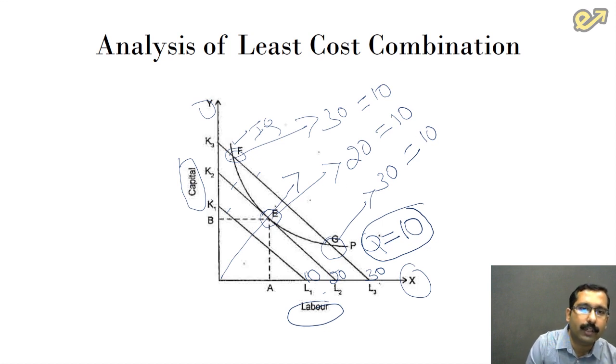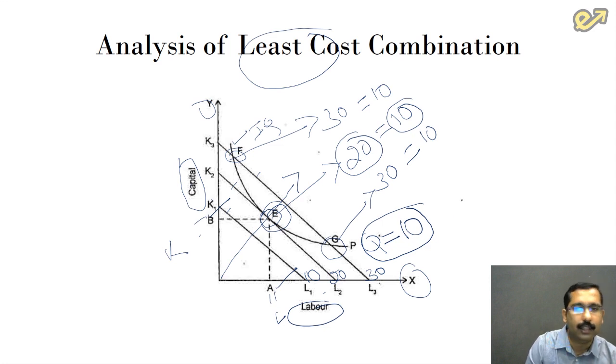The answer is straightforward, very simple. We will go with combination E because the cost that we are incurring here is only 20 rupees and the output that you are obtaining is 10 units. So we go with this combination E, and A combination—that is A units of labor and B units of capital—comes to us at the least cost that is possible and we are obtaining the maximum output. So this is called the least cost combination.